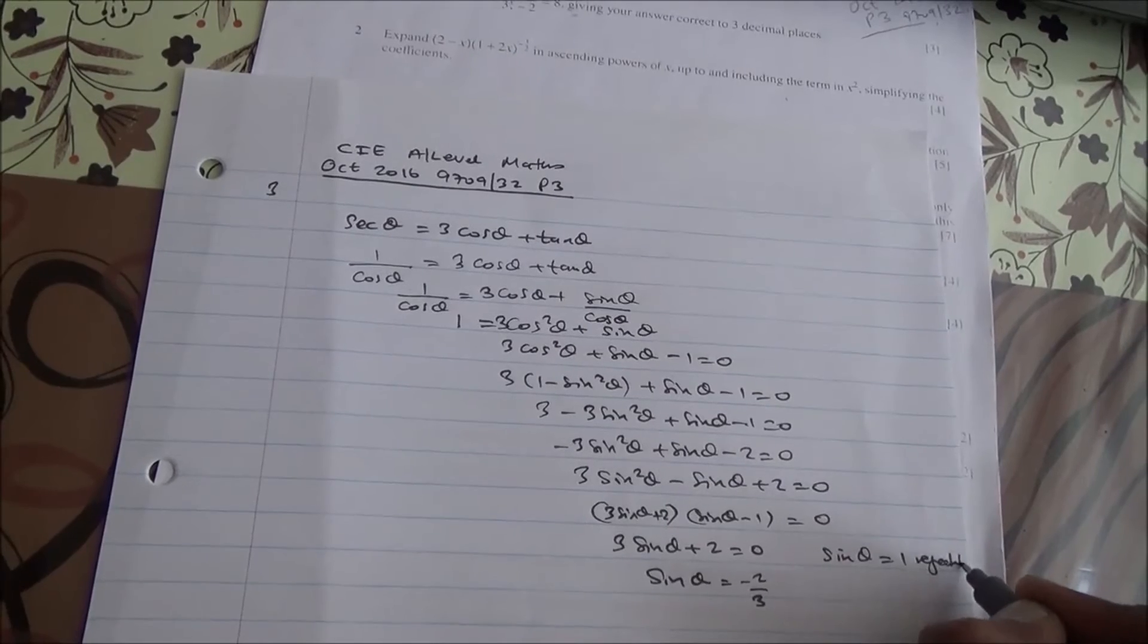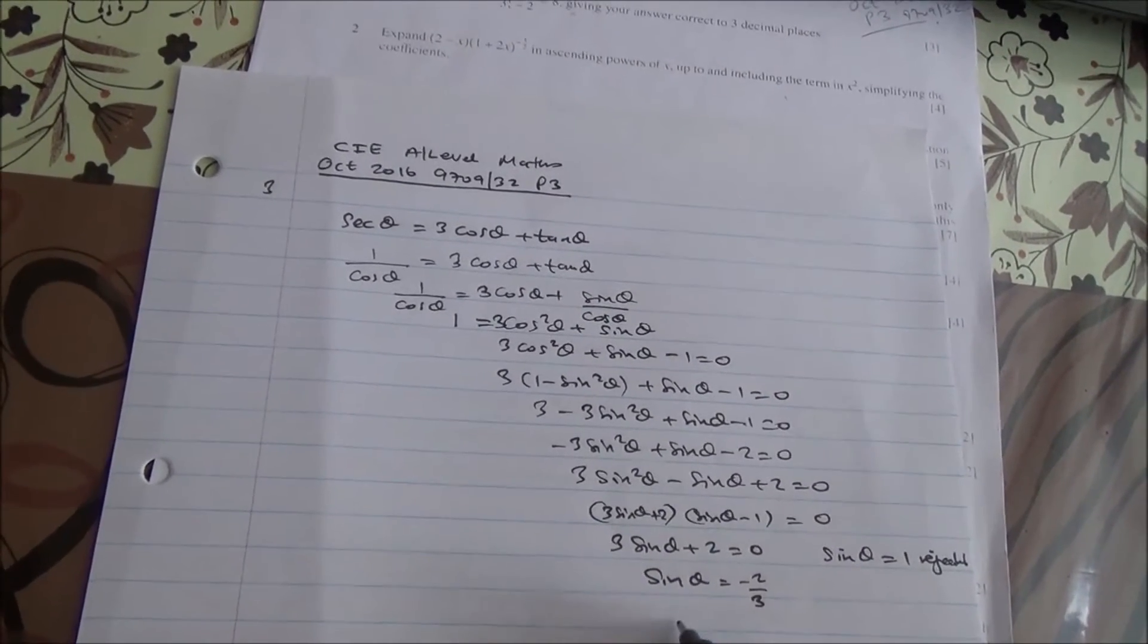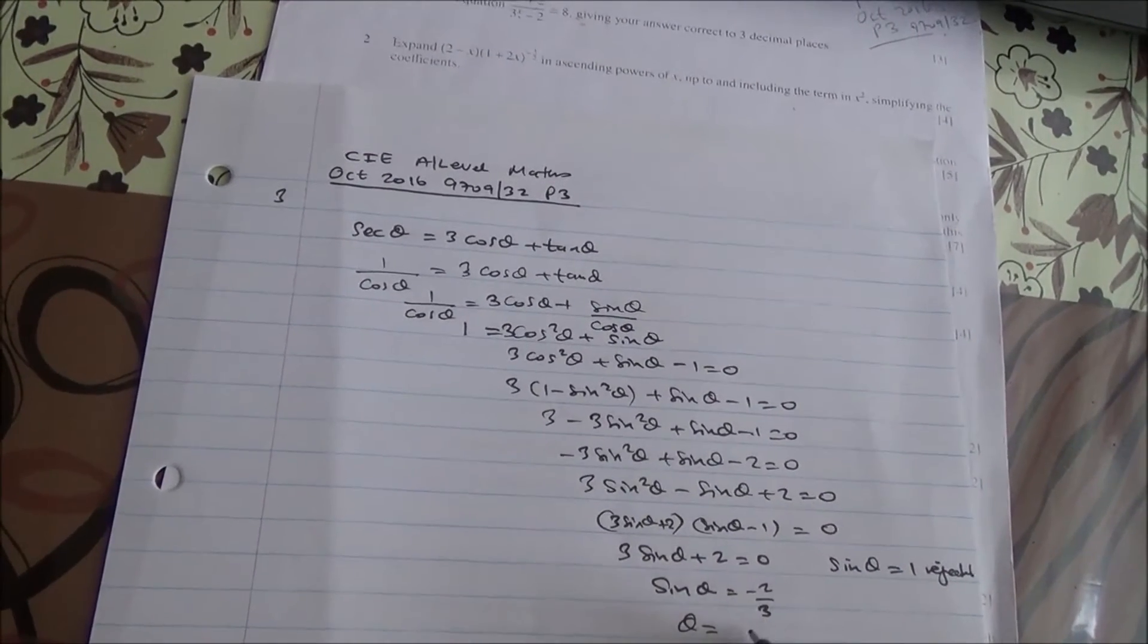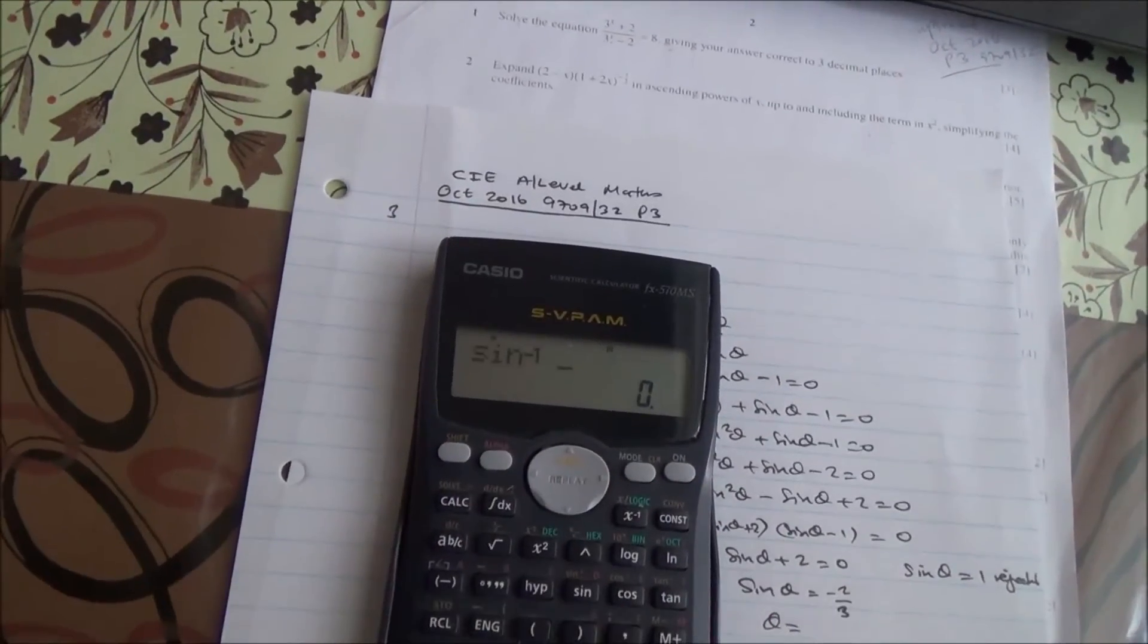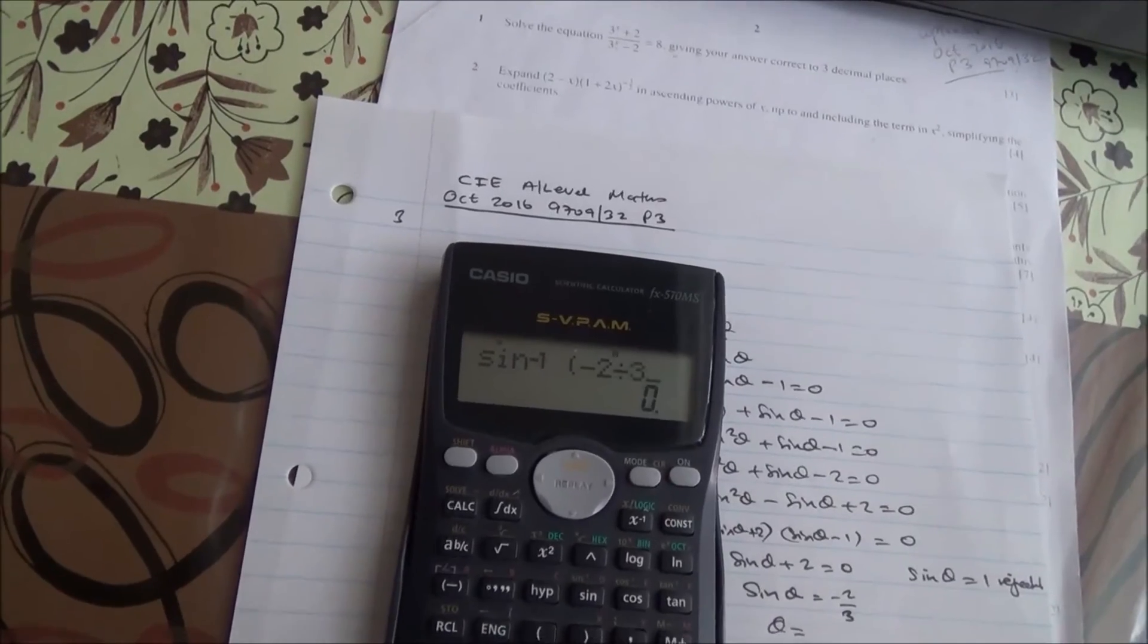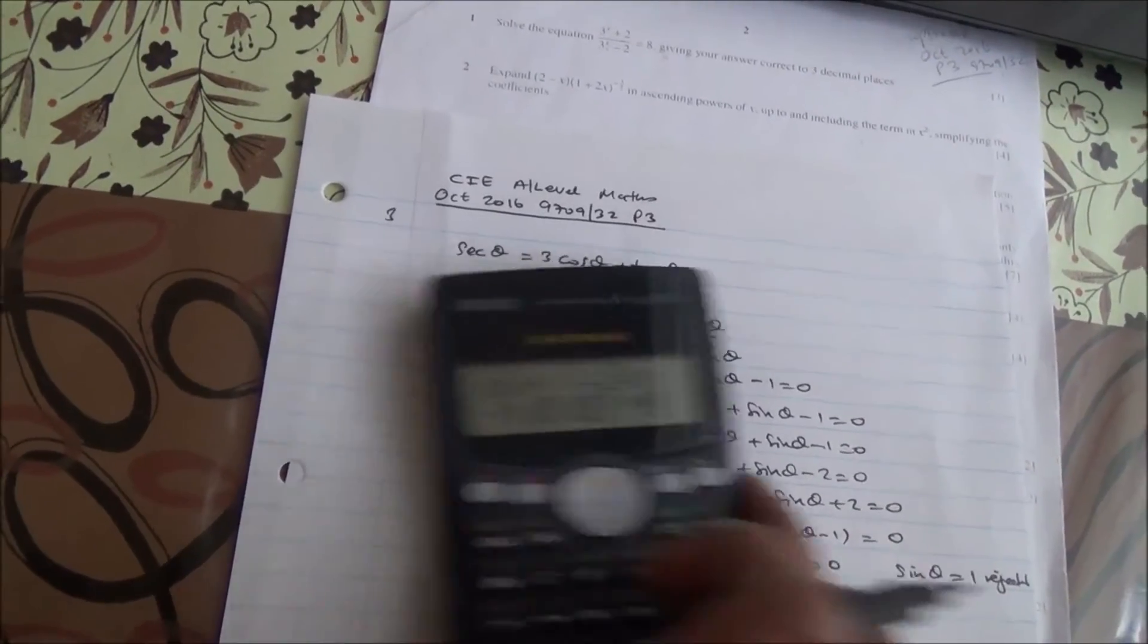Sin θ = 1 is rejected because it equals 90 degrees. So θ = sin⁻¹(-2/3) = -41.8°.